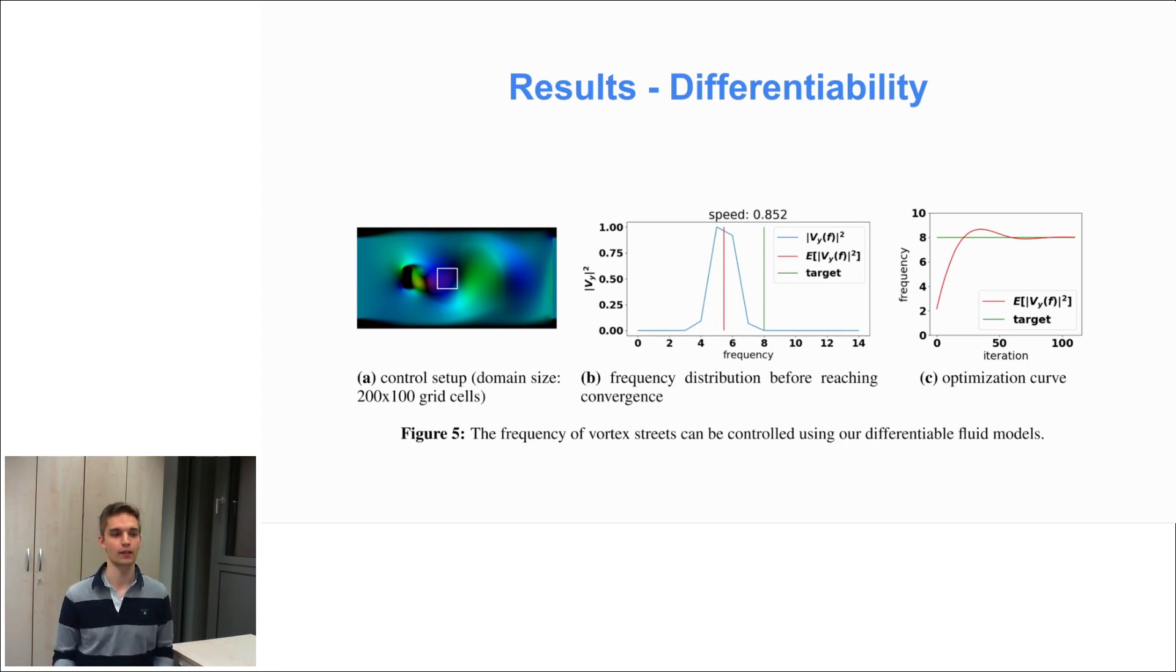And therefore, we measured the y-component of the velocity field behind an obstacle. And then we computed the power spectrum using the fast Fourier transform and then we computed the mean value of that power spectrum. And this mean value is here marked in red.